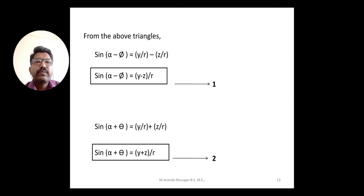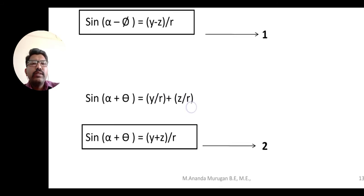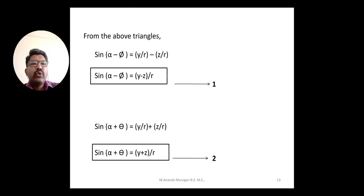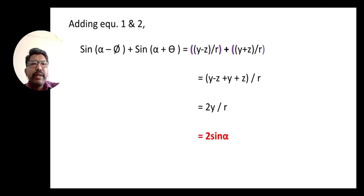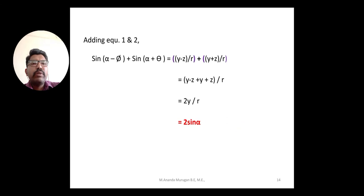From the four equations, we compute: sine alpha minus phi equals (y minus z)/R, and sine alpha plus theta equals (y plus z)/R. Adding these two results: (sine alpha minus phi) plus (sine alpha plus theta) equals (y minus z + y + z)/R. The z terms cancel, giving 2y/R. Since y/R equals sine alpha, this simplifies to 2 sine alpha. This is the Ackerman steering equation: sine(alpha minus phi) plus sine(alpha plus theta) equals 2 sine alpha.